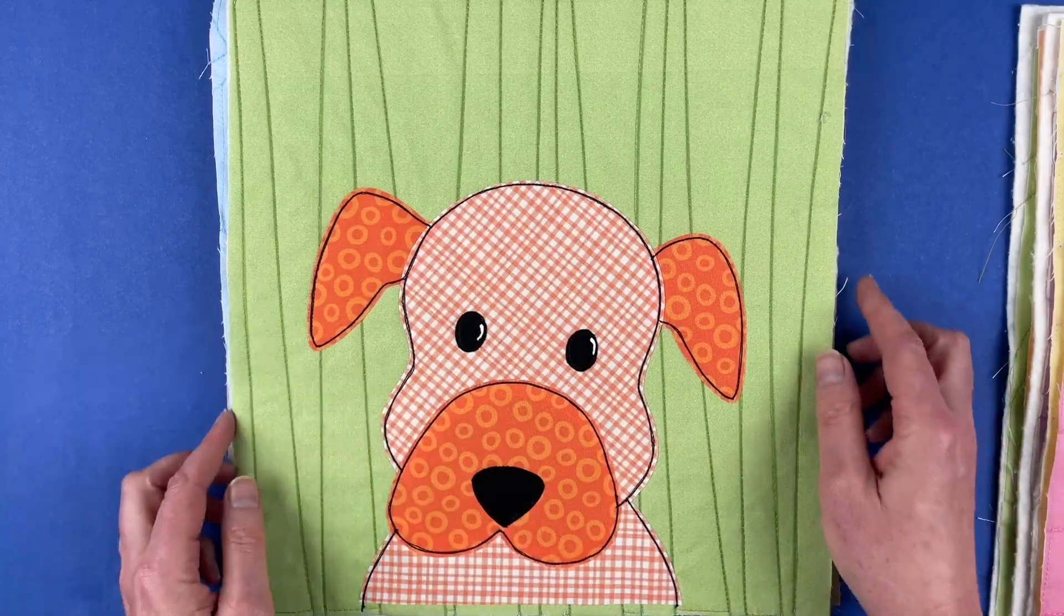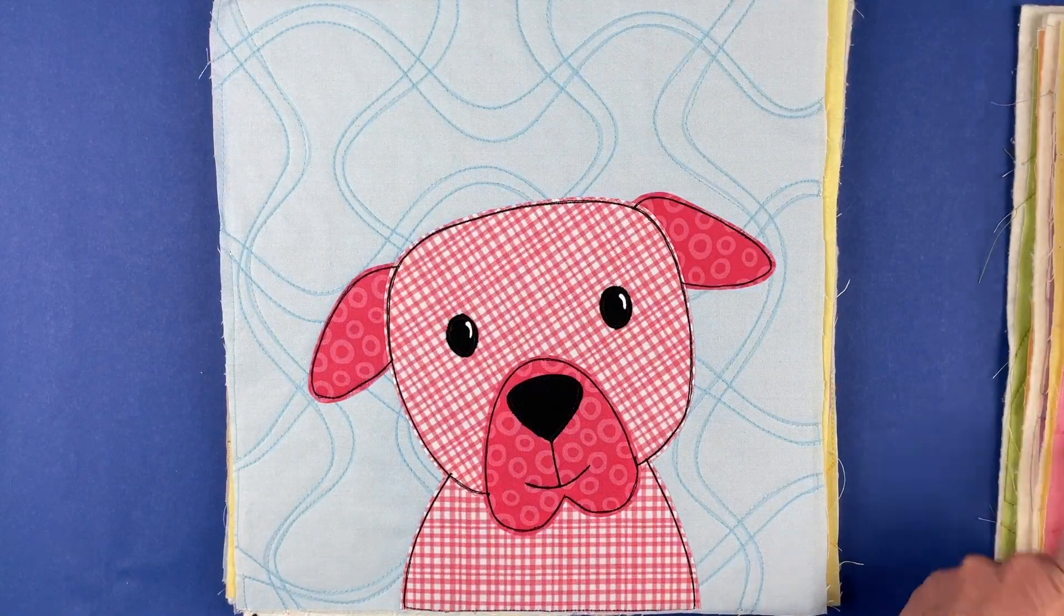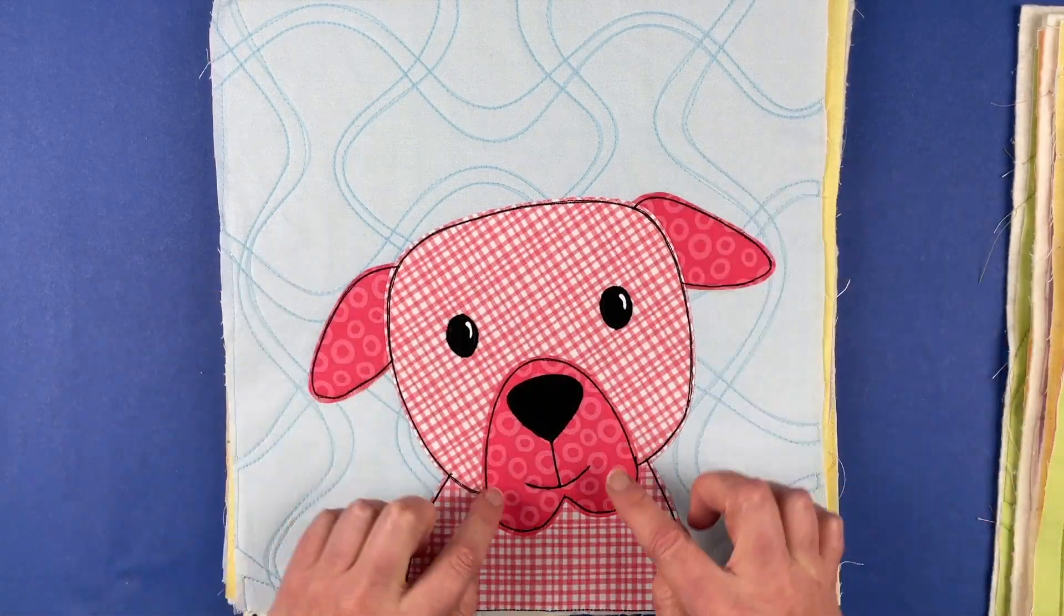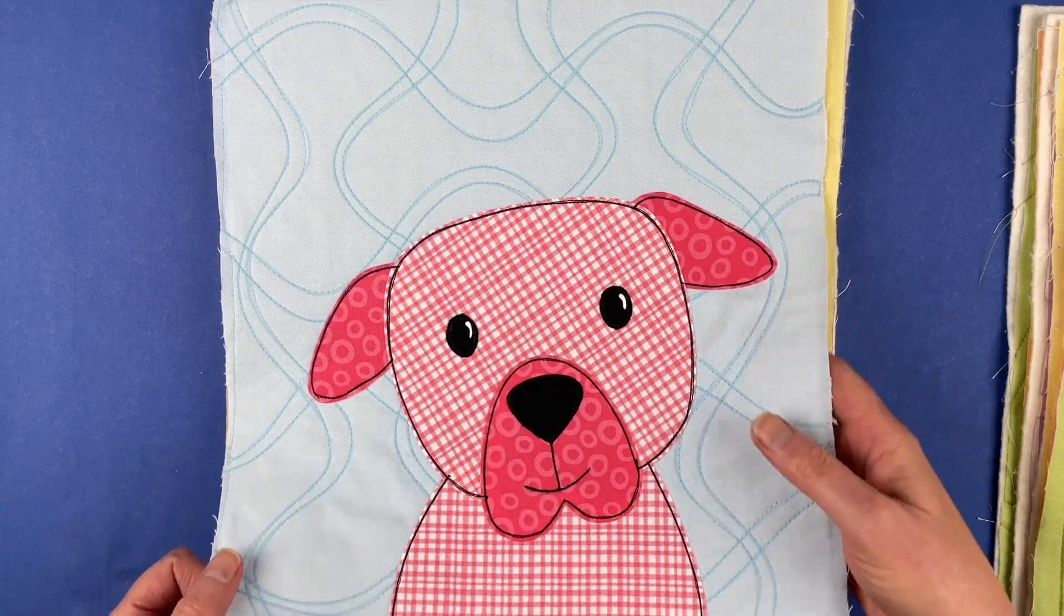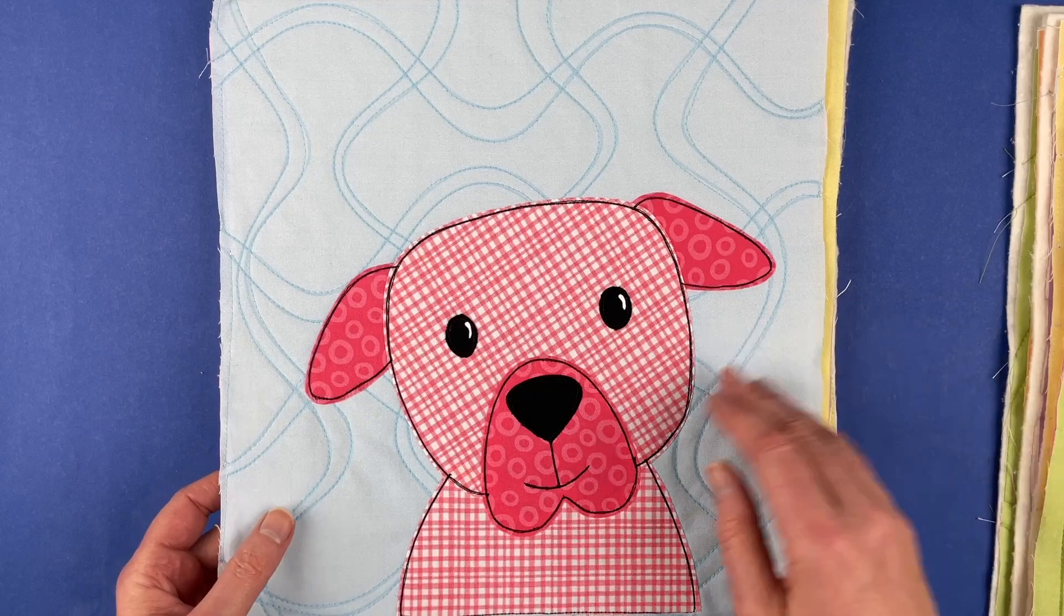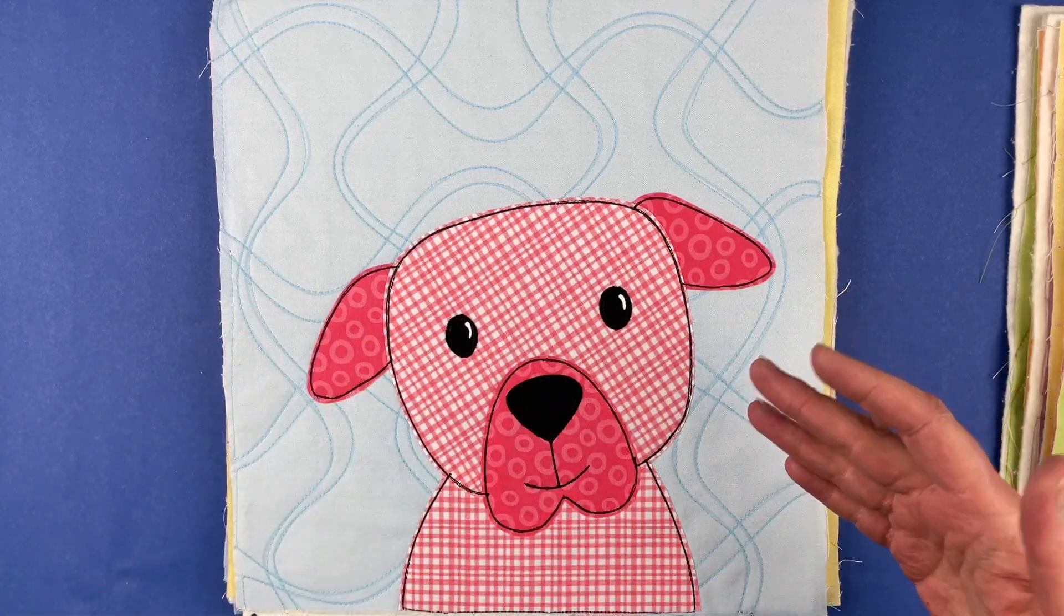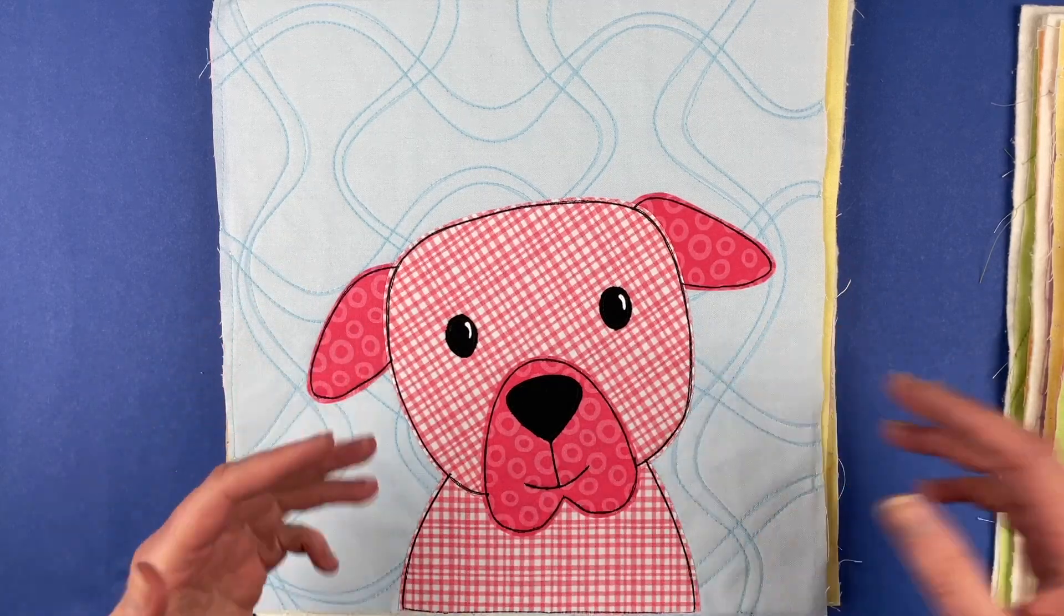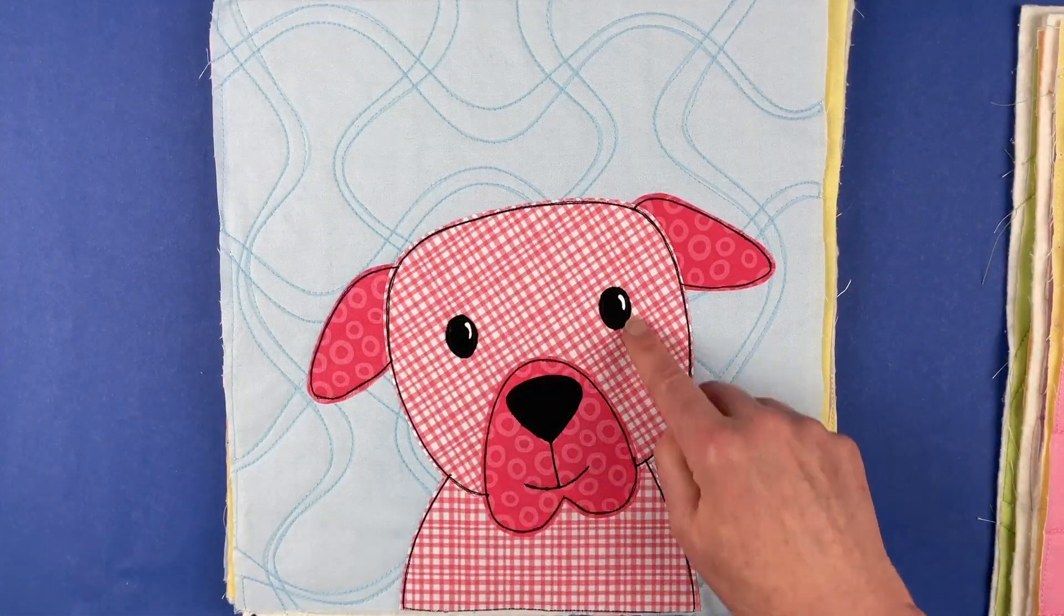This one I like. He just looks like a grumpy old man dog to me. This is another pretty standard one: shoulders, head, ears, muzzle, nose, and a line for the mouth.